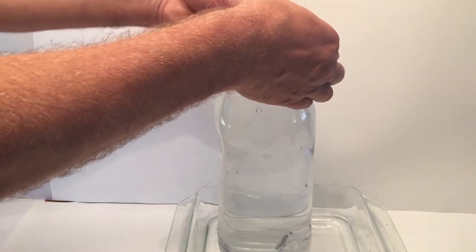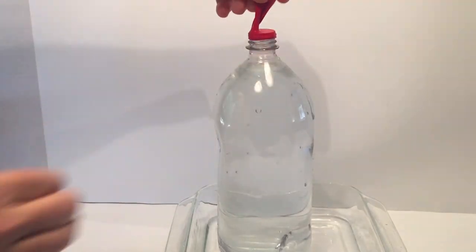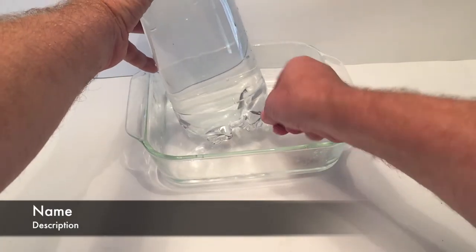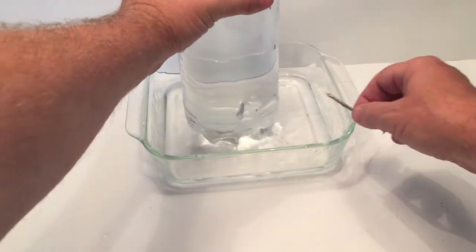and then place a balloon over the top of it, not filled, just like that, deflated. And then you're going to take a nail and you're going to poke a hole in the bottom of the two-liter bottle.